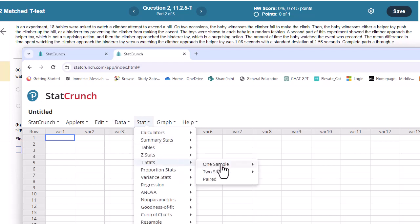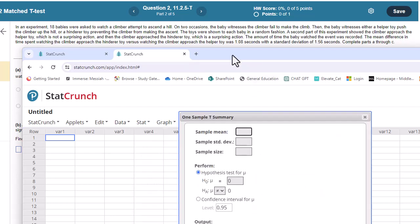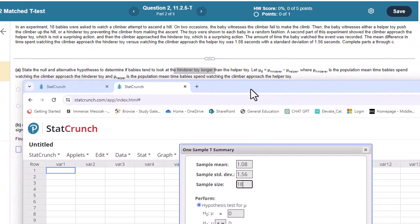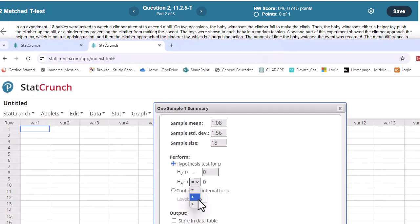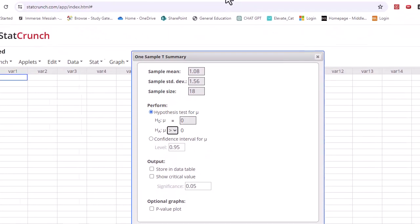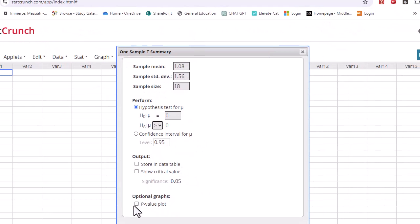So, I'm going to go to stat, t-test. And just as if I had a one sample difference, I just have summary data here. And my sample mean was 1.08 seconds. Standard deviation in this case is 1.56. Your problem might be different. And sample size, this example is 18. And notice, we need to make sure this matches up with what we already stated, mu d equals zero. And this is greater than zero.